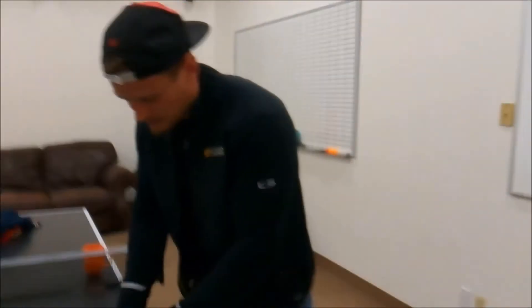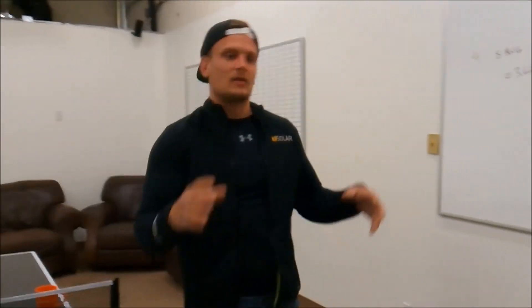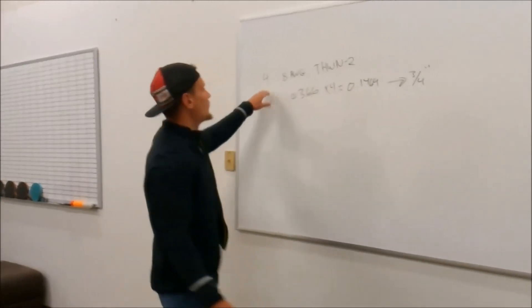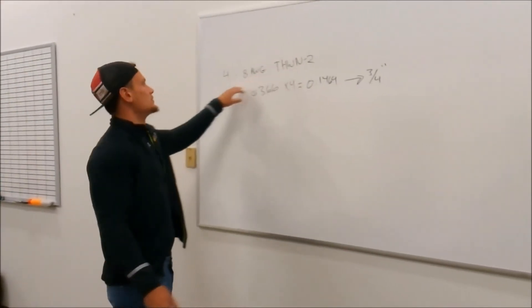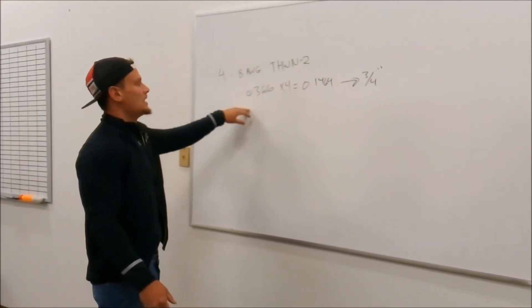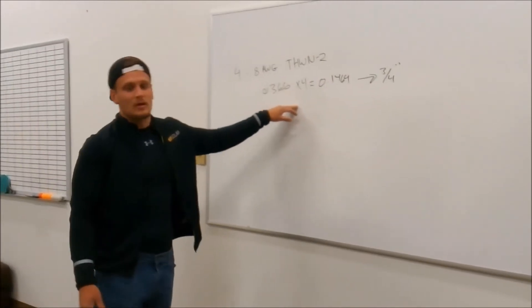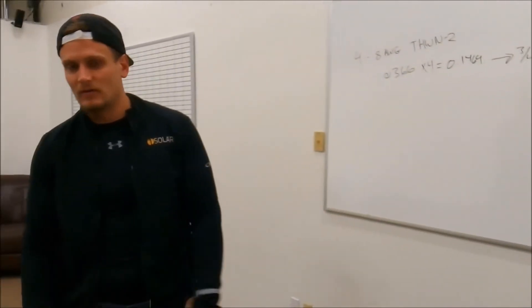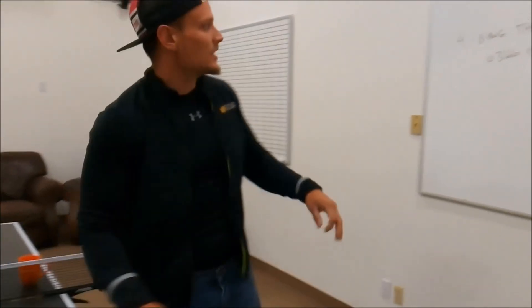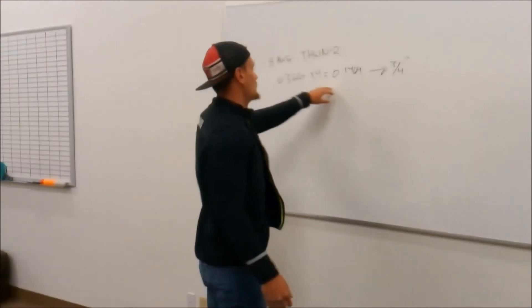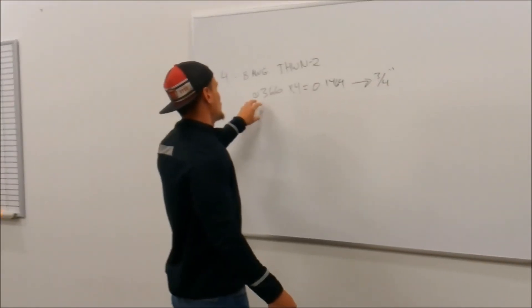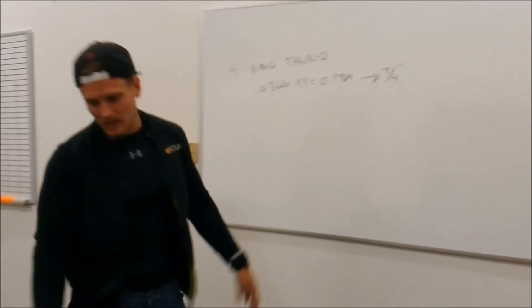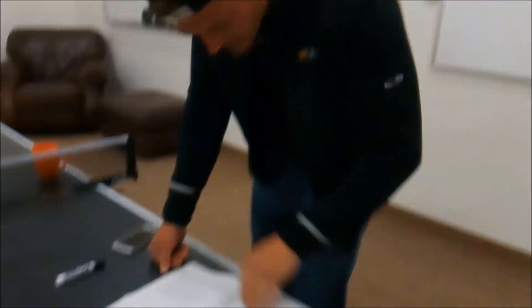So the reason that you would need these other tables is if, say we had 4, 8 gauge THWN2s, but then we had another 2, 8 gauge RHW wires. So then we have 2 different areas that we have to solve for. Even though it's the same gauge, they have a little bit of a different area. So we take this number, and then we'd say, the 8 gauge RHW wire is, we'll see where that is.